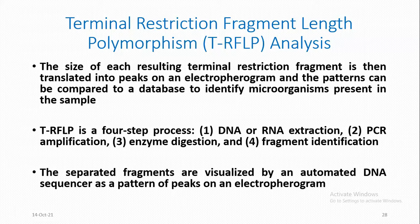Terminal Restriction Fragment Length Polymorphism is a four-step process: the first step is DNA or RNA extraction; the second step is PCR amplification; the third step is enzyme digestion; and the final step is fragment identification. The separated fragments are visualized by an automated DNA sequencer as a pattern of peaks on an electropherogram.